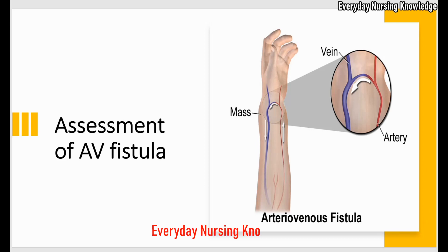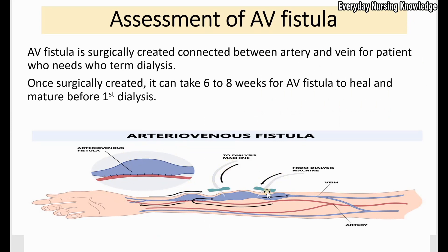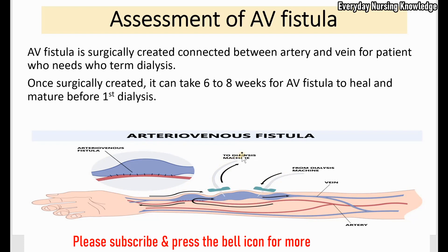Welcome to Everyday Nursing Knowledge Lectures. Today we will learn how to access an AV fistula. An AV fistula is a surgically created connection between an artery and a vein for patients who need long-term dialysis. For dialysis, two needles are inserted into this AV fistula — one needle is used to remove blood from the patient's body to send to the dialysis machine.